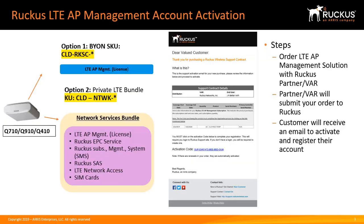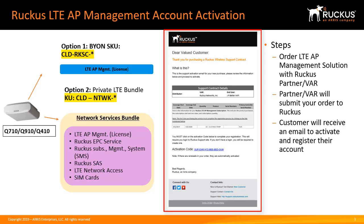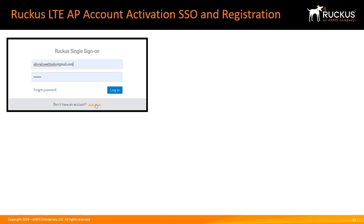After the customer orders their LTE AP Management Bring Your Own Networks solution or the LTE Networks Services bundle, their Ruckus partner or VAR will submit the information to Ruckus and the customer will receive an email to activate and register their account. Clicking on the link in the email will take you to the activation login portal. If this is a new account, you will click on Join Now.